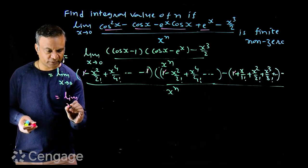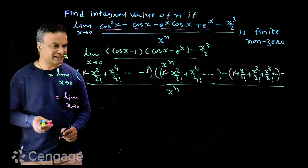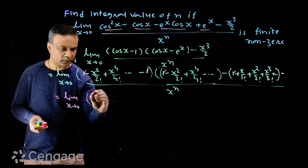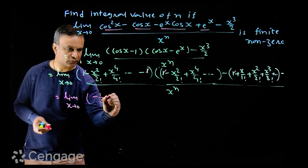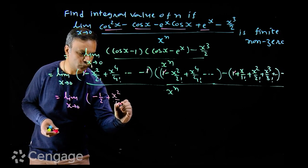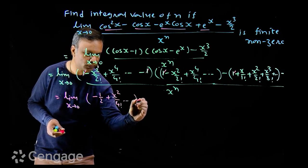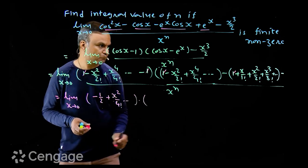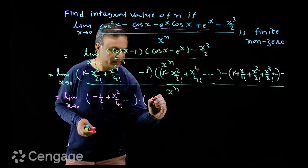So we have limit x tends to zero of, I will have here minus 1 upon 2 plus x square upon 4 factorial and so on, multiply by minus 1.